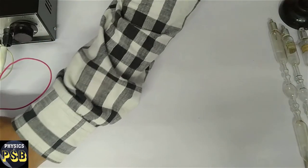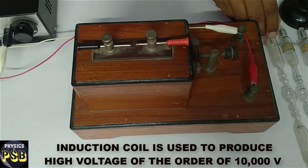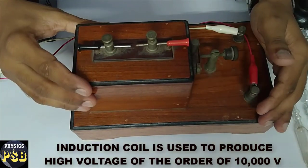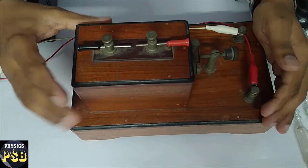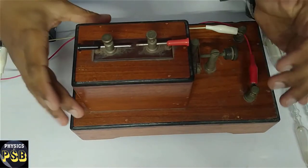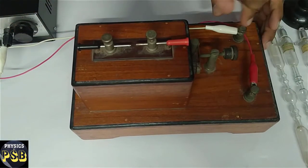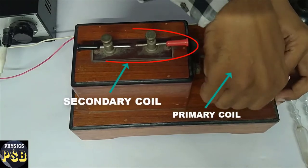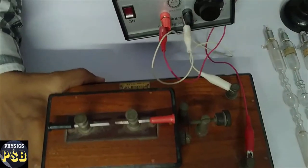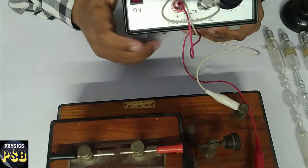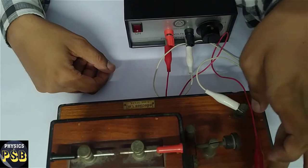Let me show you an induction coil. This device is used to produce high voltage of the order of 10,000 volts. This device can produce 5 mm spark. I have a power supply here. The ends of this power supply are connected to the primary of this induction coil.